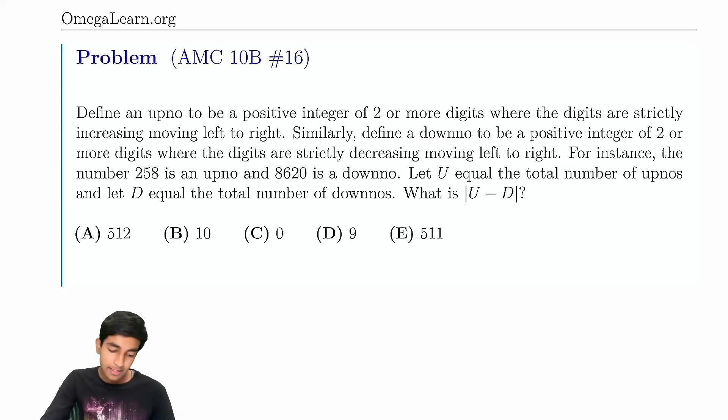We're asked to find the absolute value of the difference between the number of upnos and downnos. So here's the key thing. There's two ways to do this. One is you can find the number of upnos and downnos explicitly and subtract. But there's another more clever way to do this.